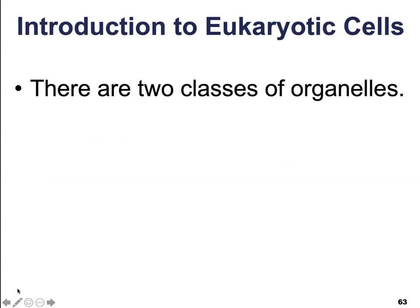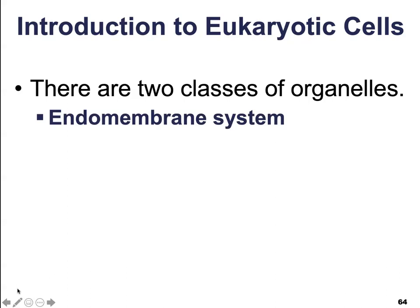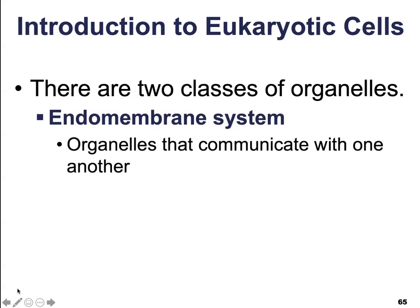There are going to be two classes of organelles that we're going to talk about in this course. The first is going to be the endomembrane system. These are organelles that communicate with one another — we'll see that they pass information from one to the next. They're all responsible for ultimately storing, recognizing, reading, and utilizing that genetic information housed within the nucleus.